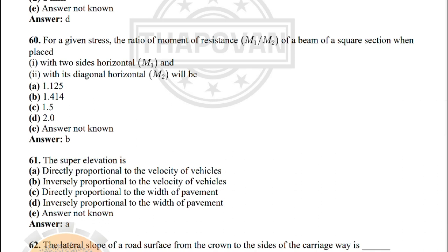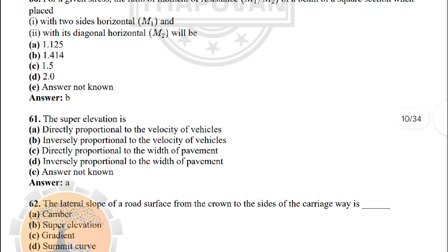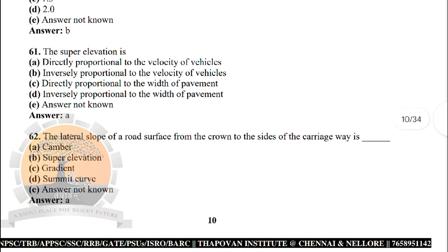Next: for a given stress, the ratio of moment of resistance M1/M2 of a beam of square section placed with two sides horizontal (M1) and with its diagonal horizontal (M2) will be — the correct answer is option B: 1.414.